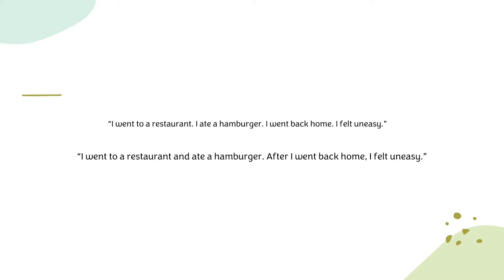Could I write this in a better way? Let's see: 'I went to a restaurant and ate a hamburger. After, I went back home and felt uneasy.' Now this paragraph explains the same event but does not seem disconnected and is easier to follow. The sentences aren't too short — each has more than five words — and by using transition words 'and' and 'after,' it flows better, joining the sentences together.